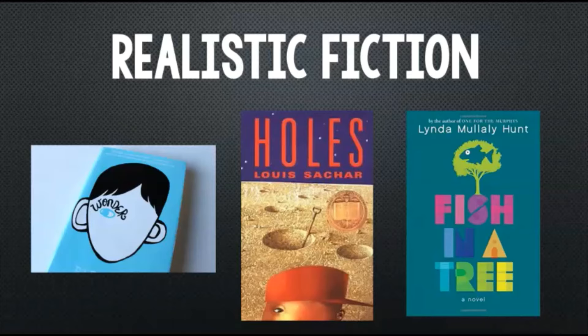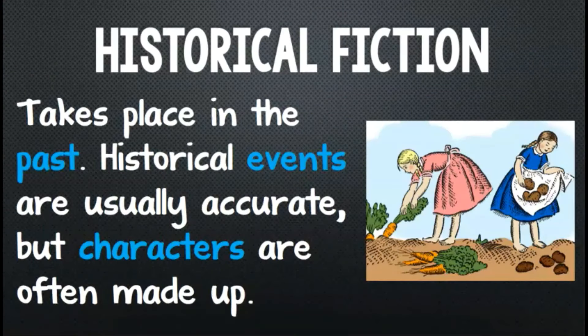The third novel, Fish in a Tree, is about a girl in 6th grade whose struggles to read make her the target of the class bully. Each of these novels include realistic characters and events that could happen in real life.